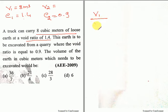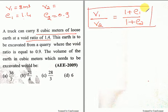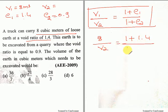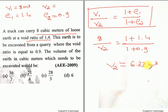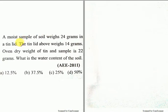By applying the simple variable equation we can find the value. The relationship is: V1 by V2 is equal to (1 plus E1) divided by (1 plus E2). This is a very important equation — please remember it. So 8 divided by V2 equals (1 plus 1.4) divided by (1 plus 0.9). The value of V2 becomes 6.33 meter cubes, and in terms of the nearest fractional value it will be 6.